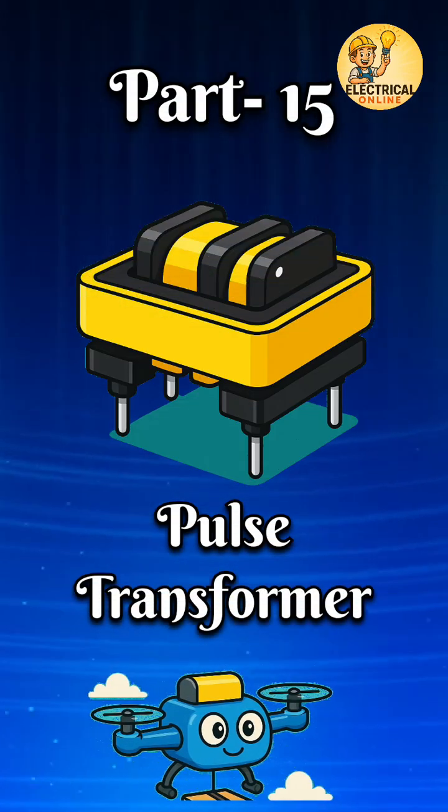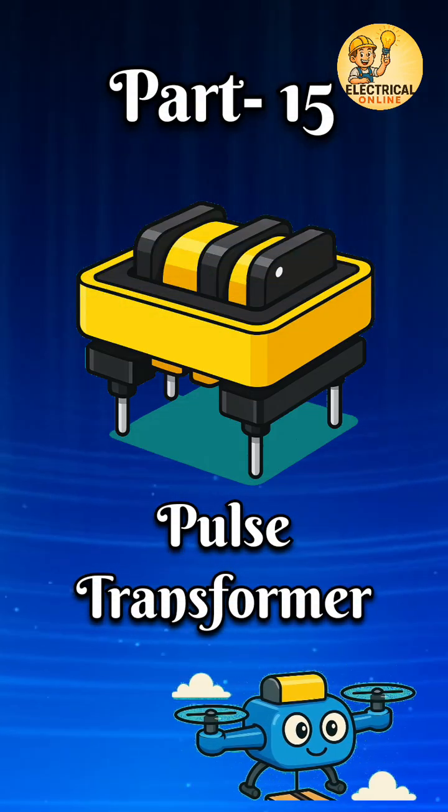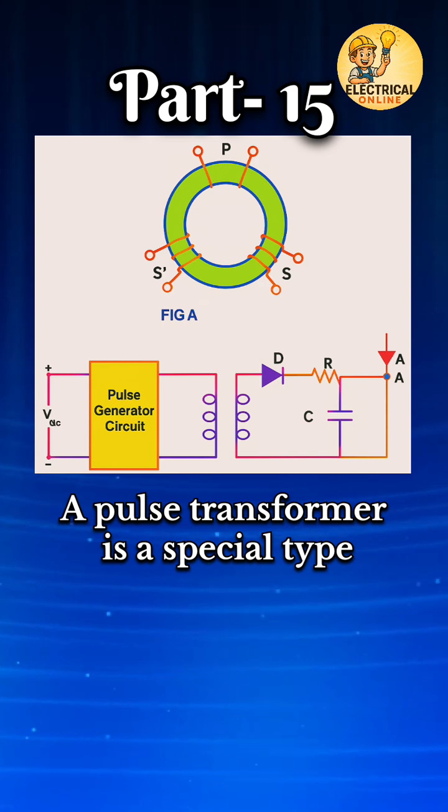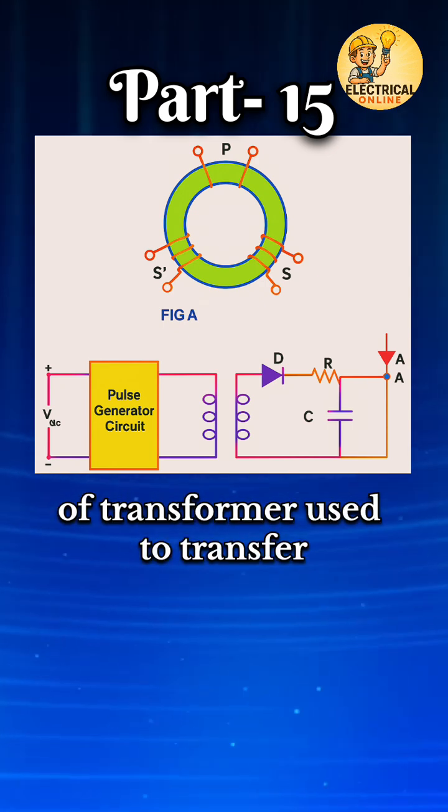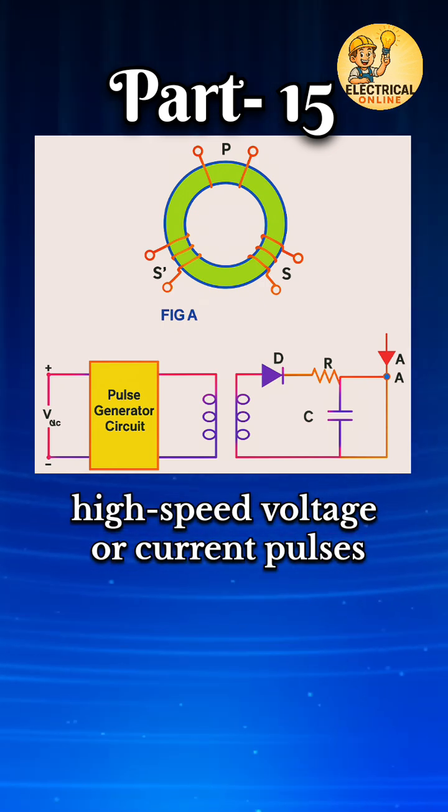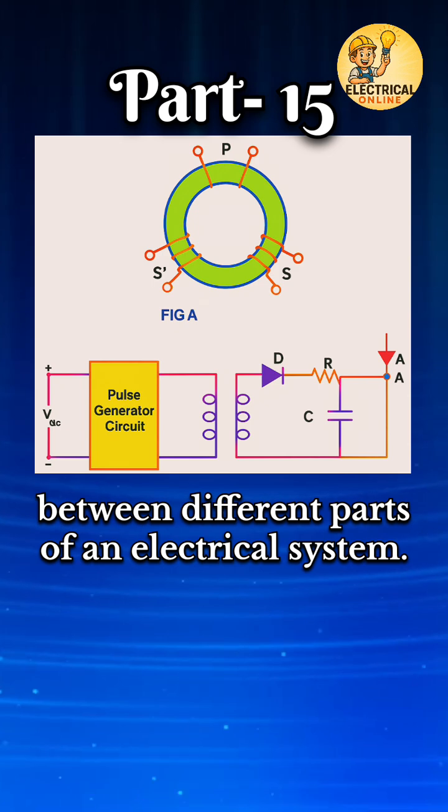In transformer type series, the 15th one is the pulse transformer. A pulse transformer is a special type of transformer used to transfer high-speed voltage or current pulses between different parts of an electrical system.